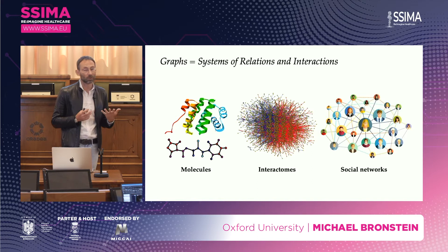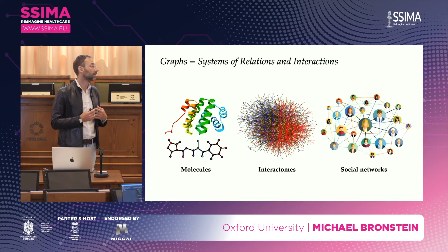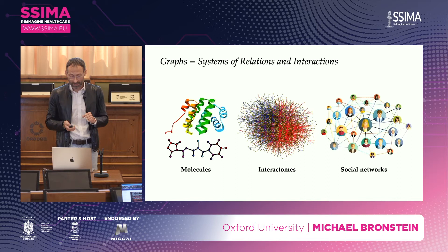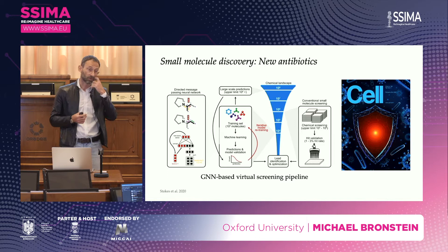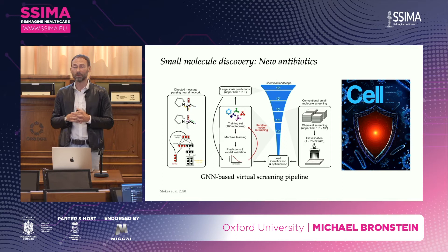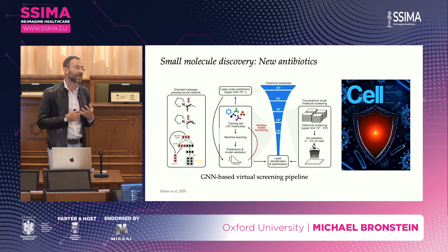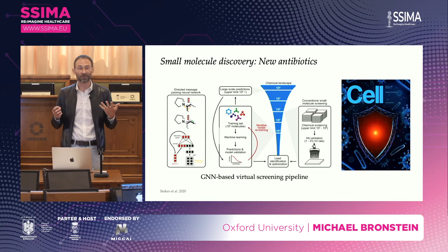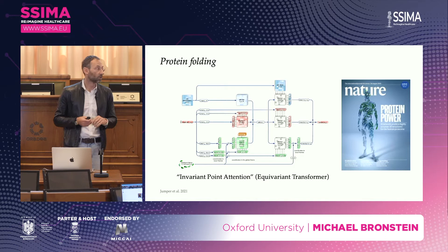Graphs are interesting because you can model practically any system of pairwise relations as a graph — at all scales, from individual molecules to interaction networks (interactomes in biology) to entire social networks or patient networks relating patients with similar diseases. At the microscopic level, graph neural networks have already been adopted in drug screening and discovery pipelines. One important example was the publication from Jim Collins' group at MIT, which used graph neural networks for virtual screening for new antibiotic compounds, showing that compounds like halicin — initially designed as an anti-diabetic drug — have powerful antibiotic properties.